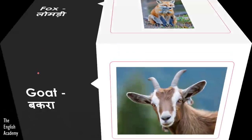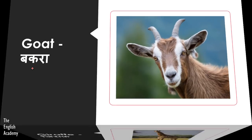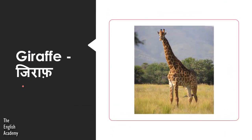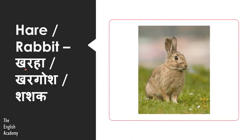The next animal is Bakra — Bakra we call Goat. Then there is Giraffe — Giraffe is called Giraffe in English as well. Next animal is Khargosh or Shashak, which in English is called Rabbit or Hare.